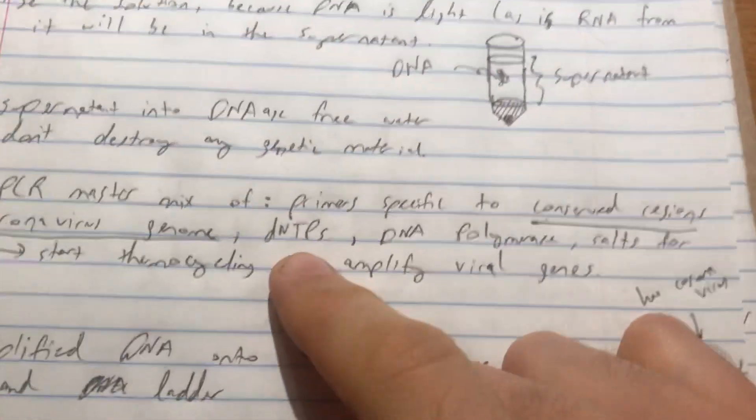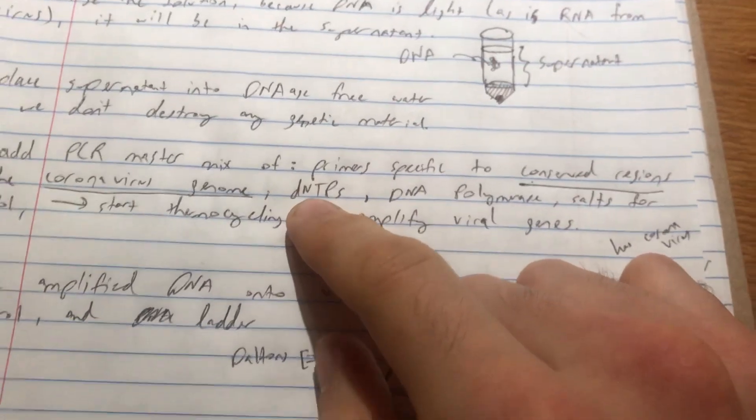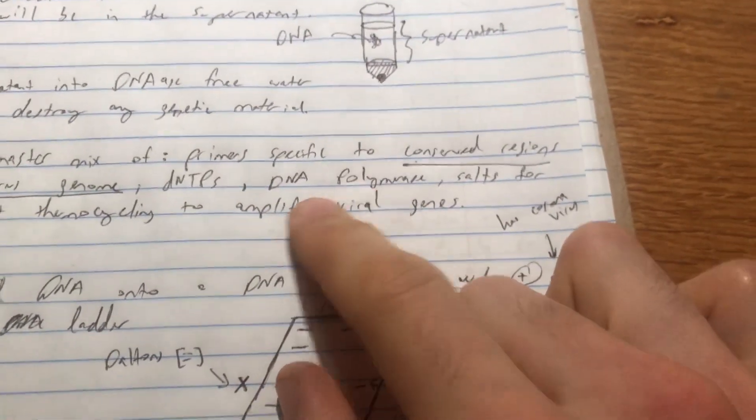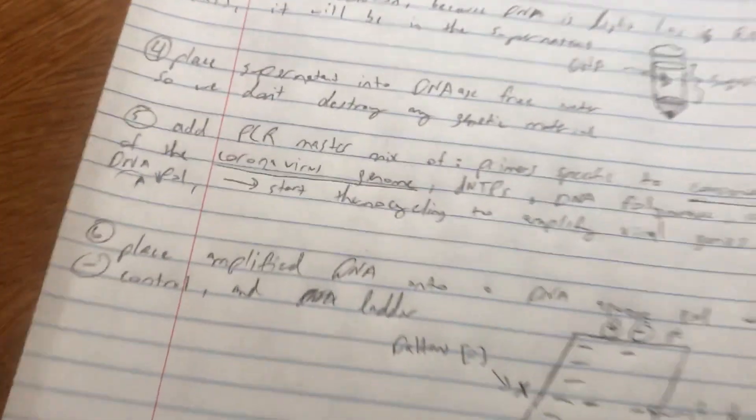So we're going to provide dNTPs, these are the ATGC. So we need to provide these and we also provide DNA polymerase that can withstand high temperatures up to 95 degrees Celsius, as well as salts to help stabilize and activate the DNA polymerase.